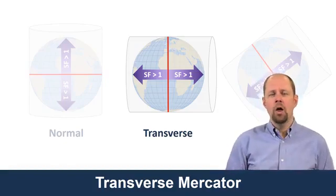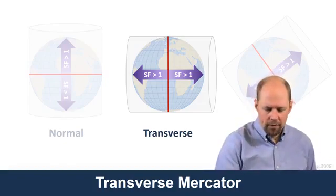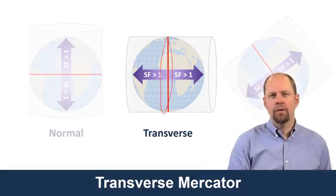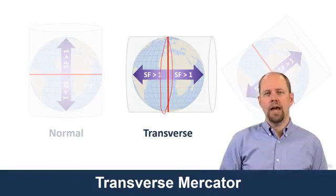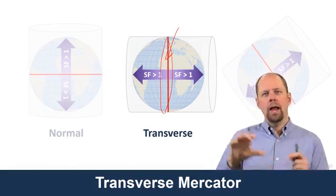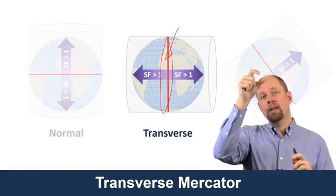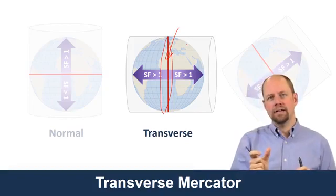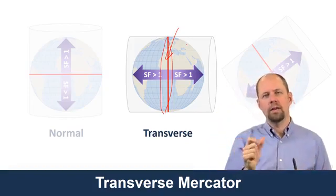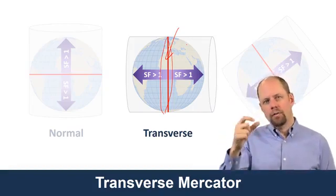But that's only for that one line — you could make a map of that area, but what about the rest? They said: we'll make a map projection customized for just this zone, then rotate that cylinder a few degrees and make another map projection for the next slice of the Earth, then rotate again and do the next slice. They created these customized zones for every part of the Earth, as we'll see.